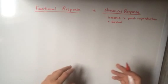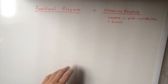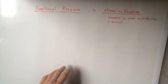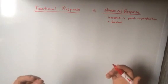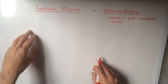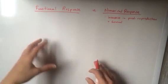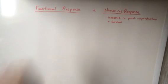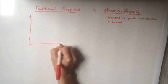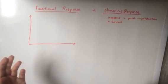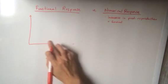Functional response is a little more distinct than numerical response in that functional response is the relationship between the rate of consumption of a single predator and its food density, its food source. We can classify it or quantify it by looking at a relationship on a graph.